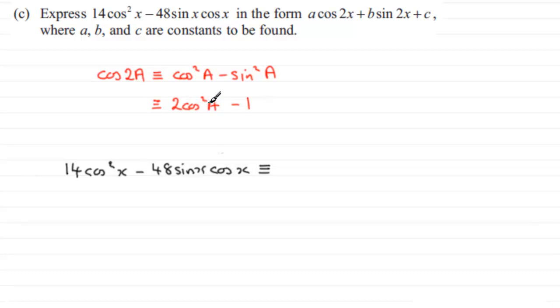And from this we could rearrange this to make cos²a the subject. If we add 1 to both sides and then divide by 2 you end up with cos²a is identical to a half of cos2a + 1. So you should be familiar with that. I hope you are.